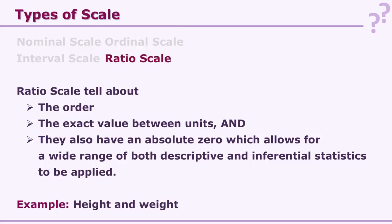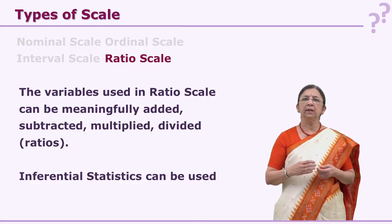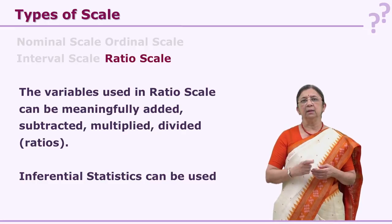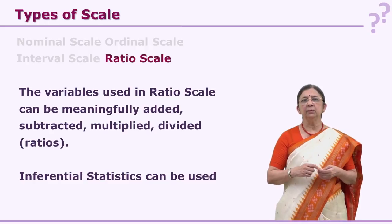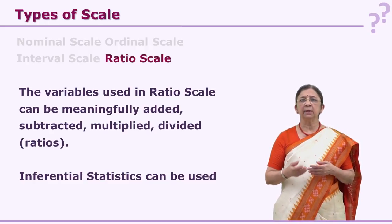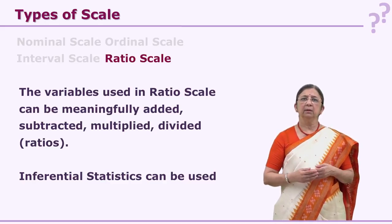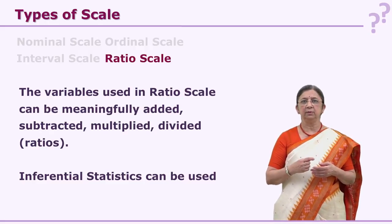The fourth type of scale is ratio scale — there is a ratio between any two values. It has an order, it gives you exact value between two units, and it also has an absolute zero. If you take a scale that measures weight or height, you will see there is a zero — an absolute zero is required for any ratio scale. This is the highest level of scale where we can use inferential statistics, not only descriptive statistics, because there is a ratio and a true or absolute zero. Variables in ratio scale can be added, subtracted, and divided — you can use many mathematical processes on it.